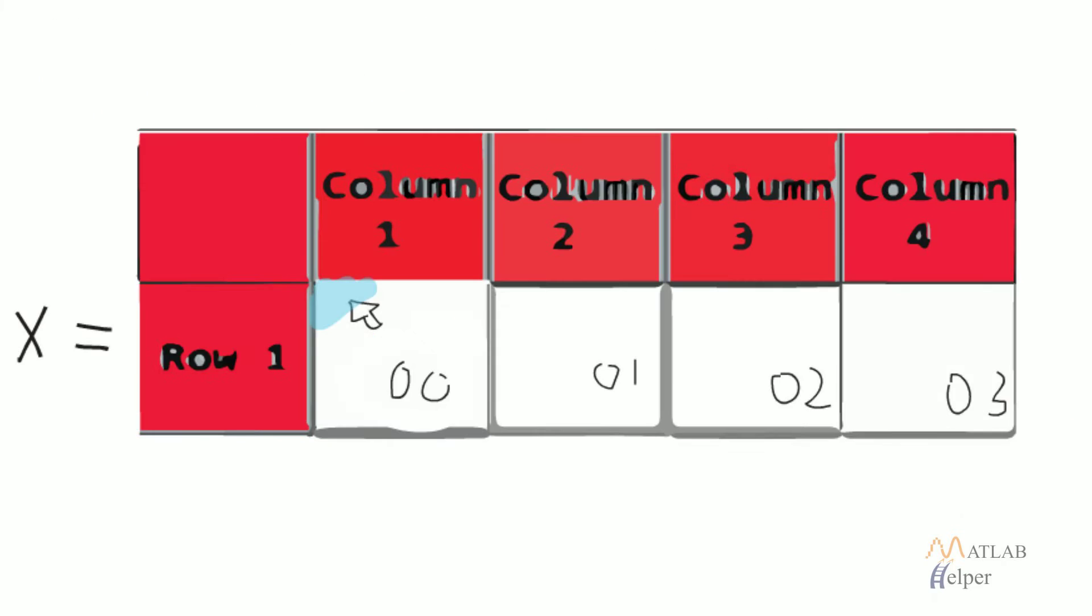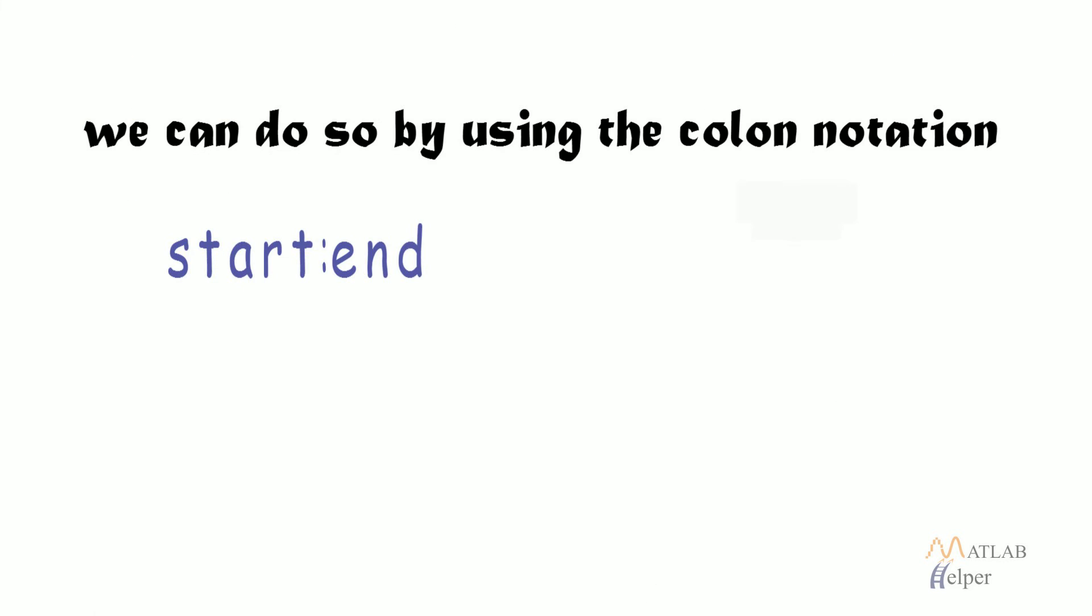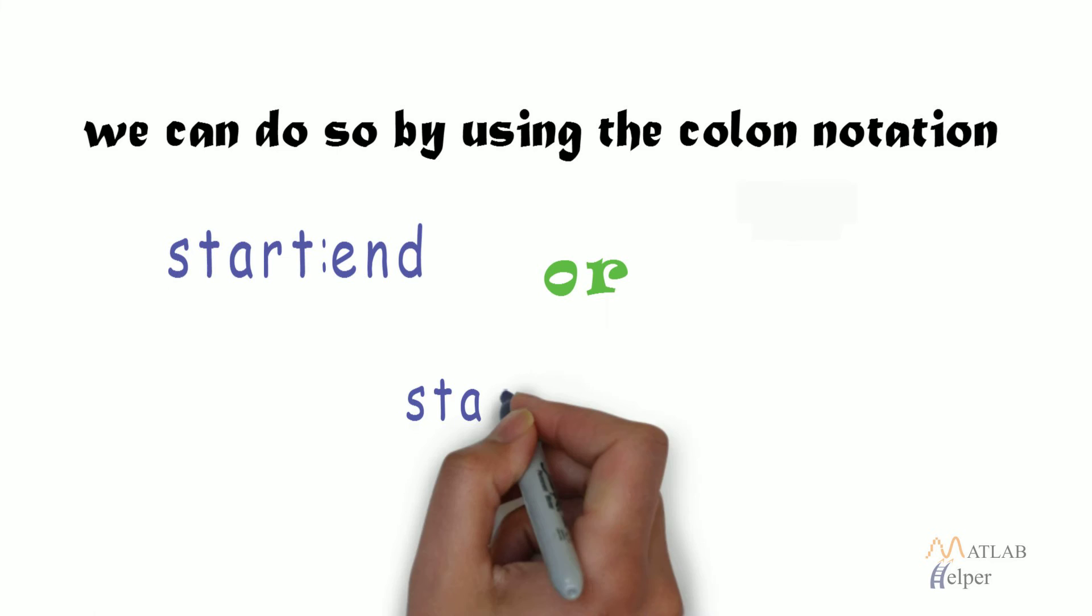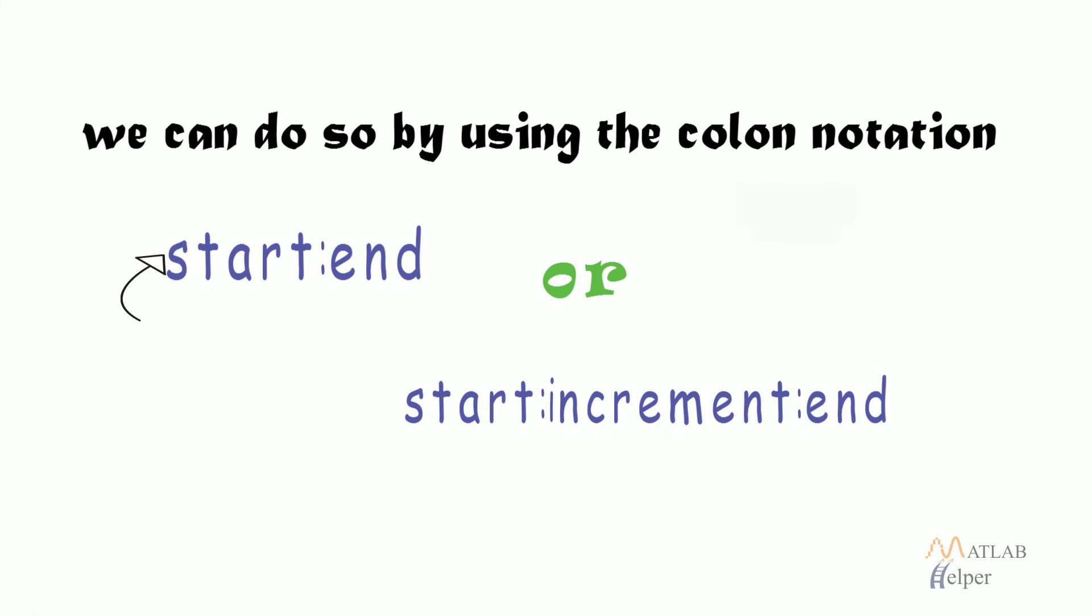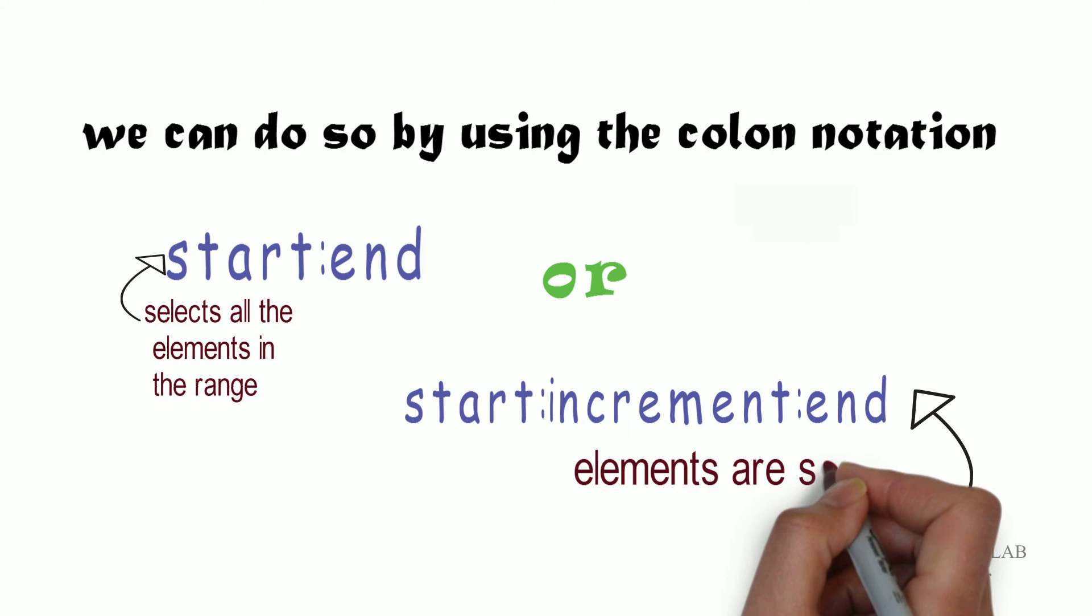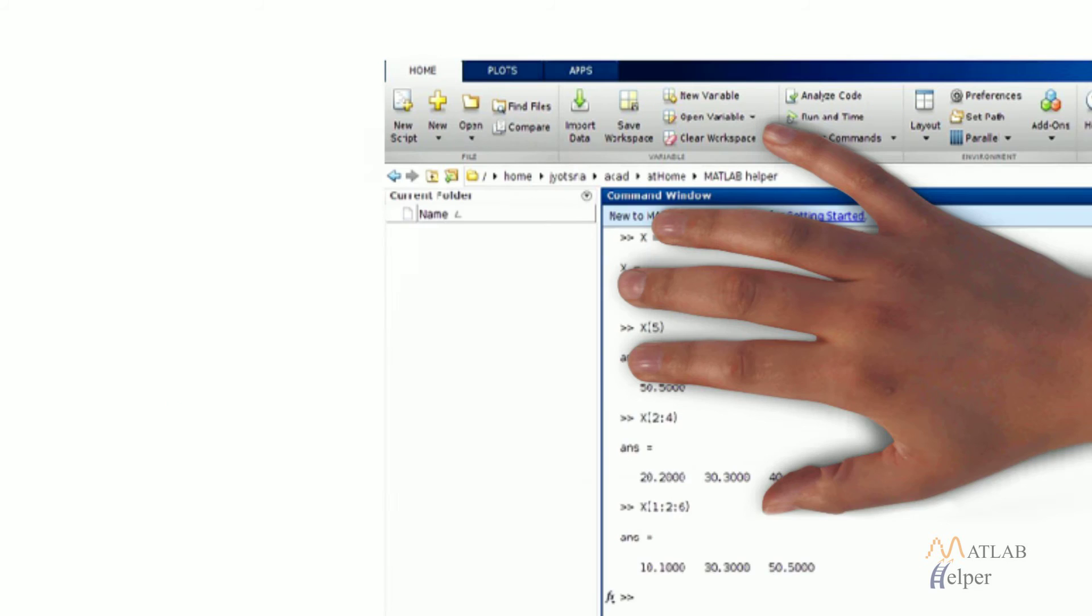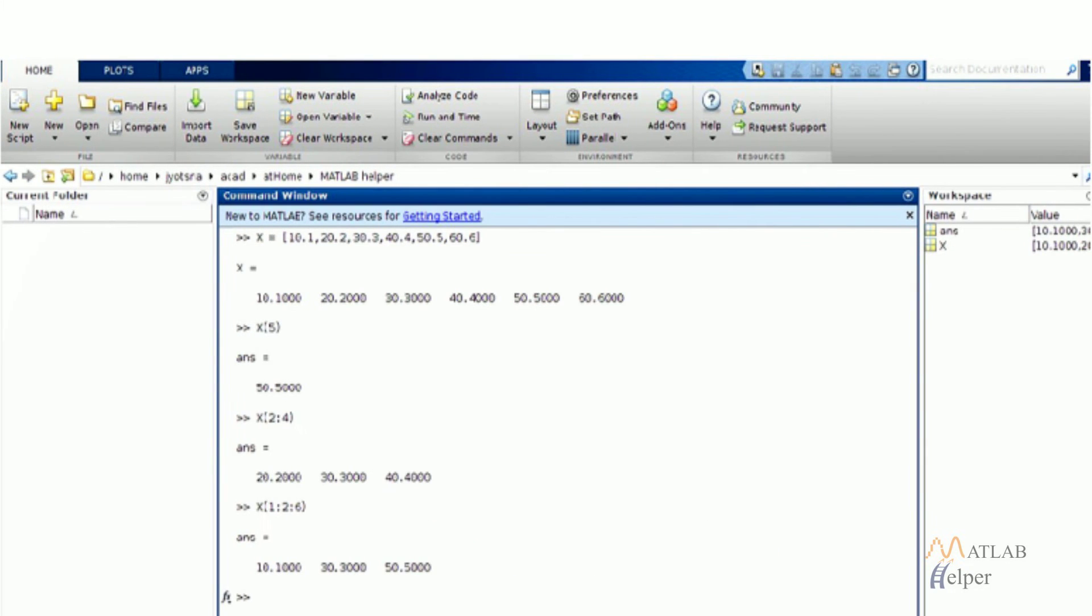If we want to select a range of elements we can do so by using the colon notation. The first type of indexing selects all the elements in the range, but in the second one elements are selected by skipping increment number of elements. The image shows you the correct usage of colon notation.